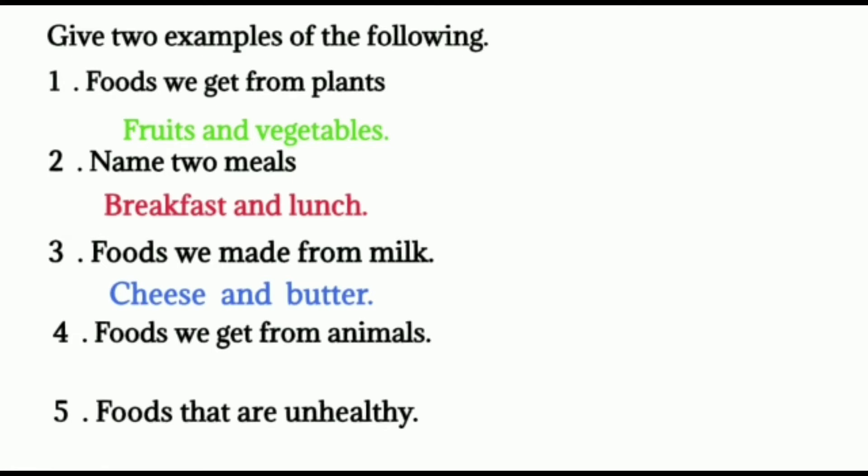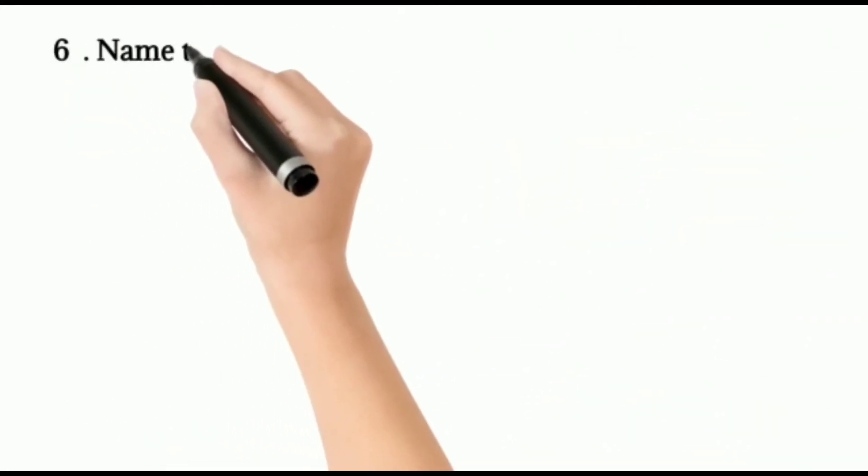Four, foods we get from animals. Milk, meat, fish, honey, etc. Five, foods that are unhealthy. That is other cold drinks, sweets, etc. Some food items are not healthy for our body. That is called unhealthy food or junk food.